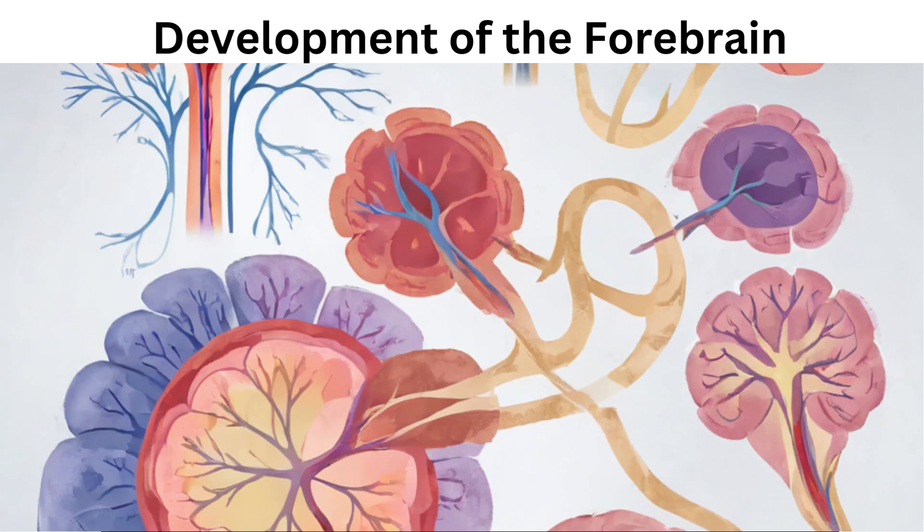During embryonic development, the forebrain is one of the first regions to form and is derived from the neural tube. It undergoes complex processes to differentiate into its various structures.